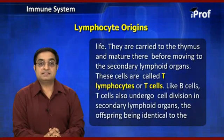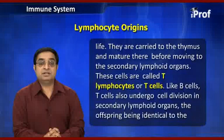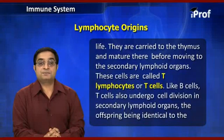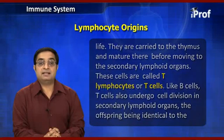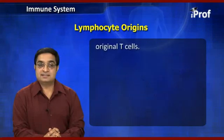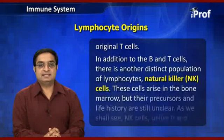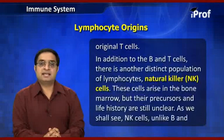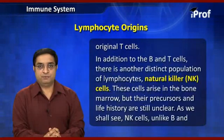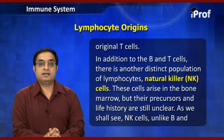These cells are called T lymphocytes or T cells. Like B cells, T cells also undergo cell division in the secondary lymphoid organs, the offspring being identical to the original T cells. In addition to B and T cells, there is another distinct population of lymphocytes called natural killer cells.